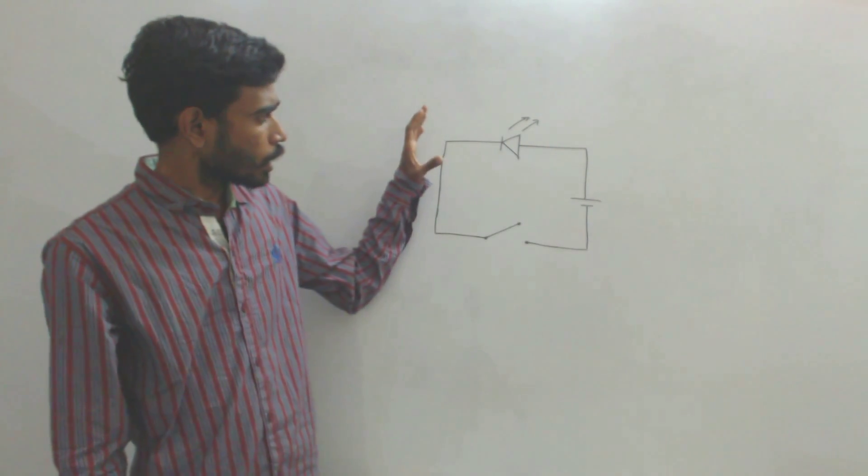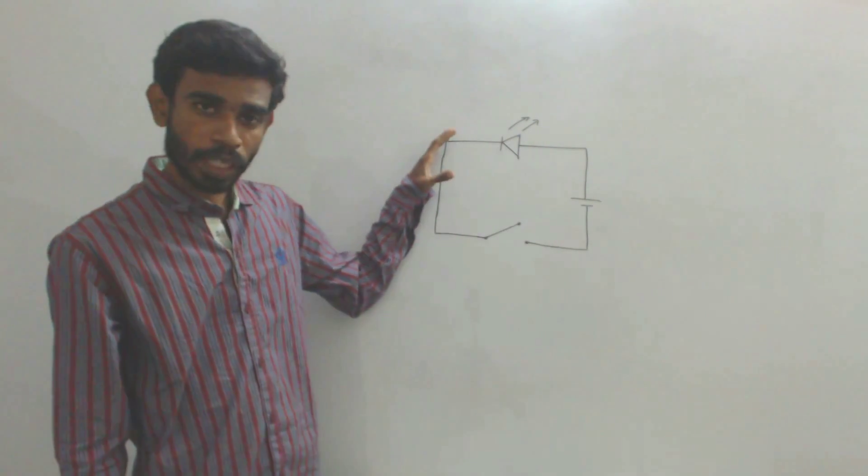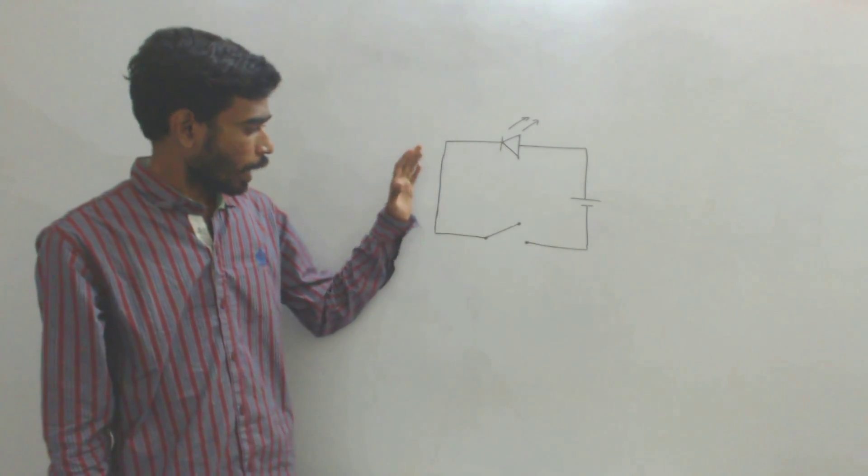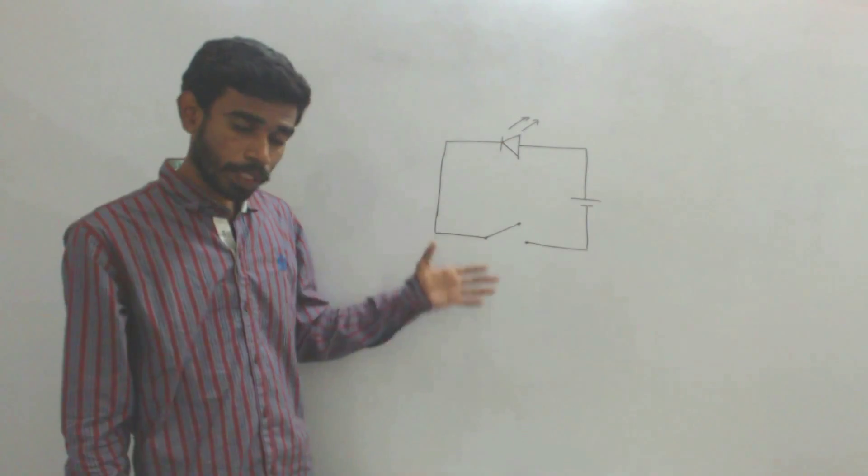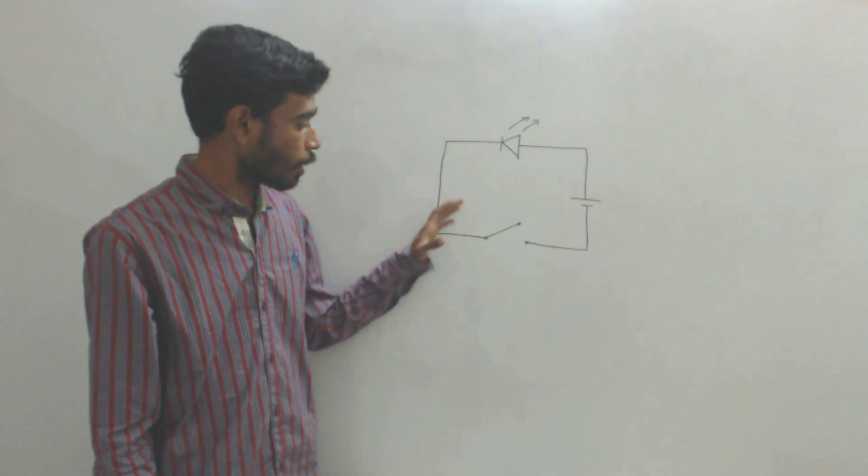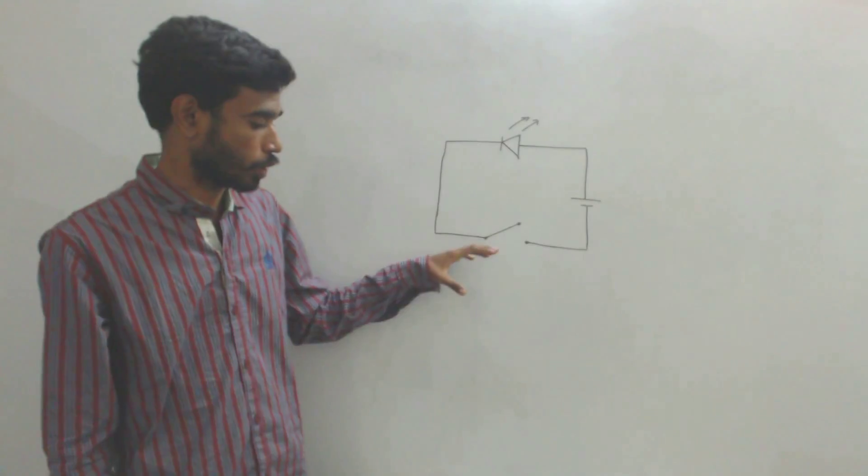So in order to turn the LED on, I have to bring the switch to closed state. To bring the switch to closed state, I have to provide some mechanical movement to the switch.